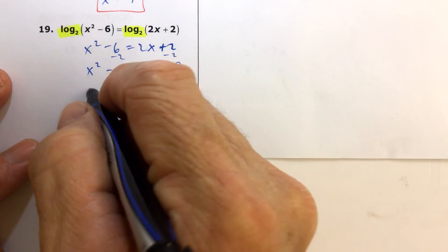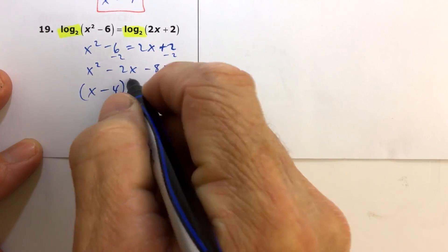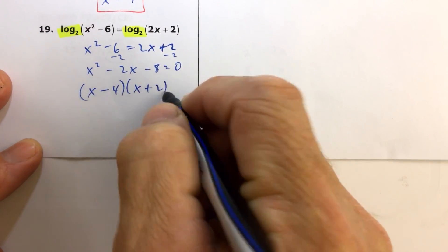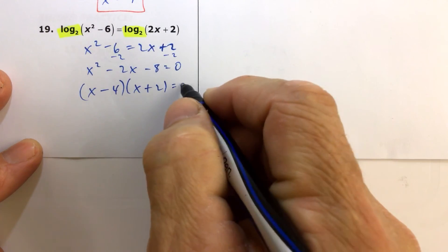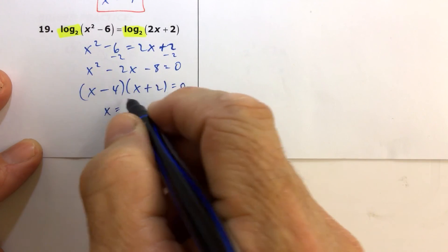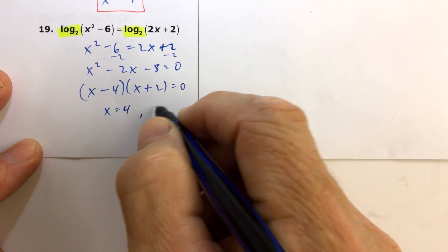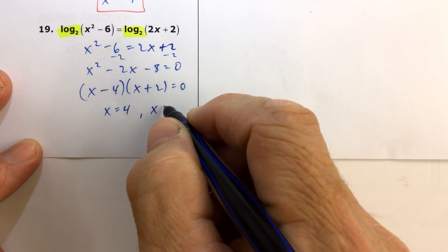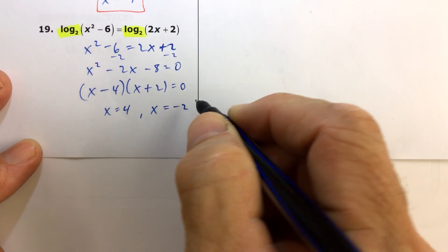We have a quadratic equation, so we remember, we factor the left side, and we get x minus 4 times x plus 2 equals 0. And when x minus 4 equals 0, it means that x equals 4. And then x plus 2 equals 0 means that x equals negative 2.